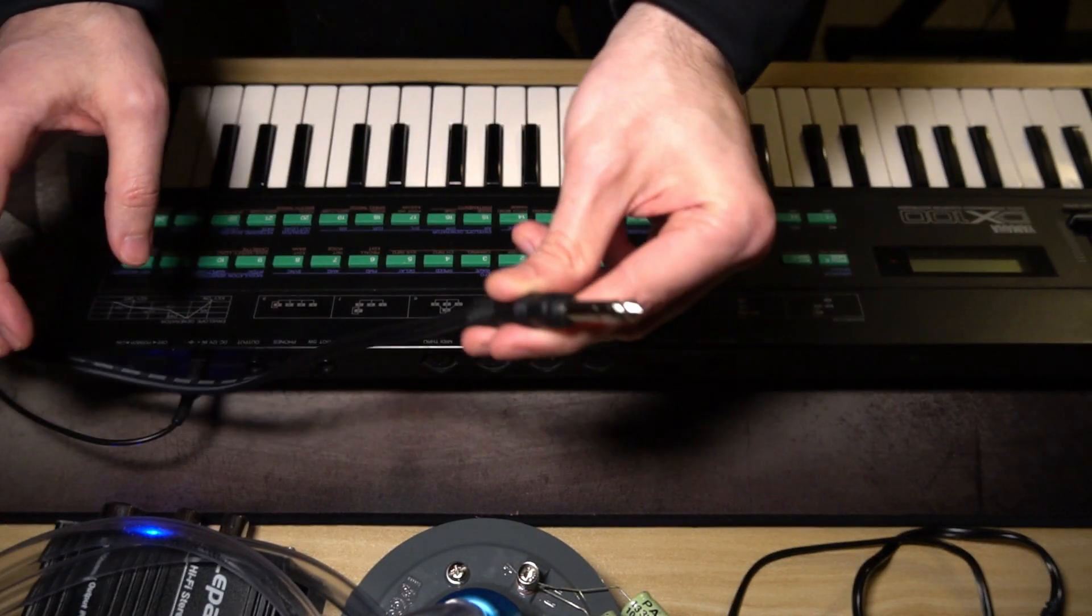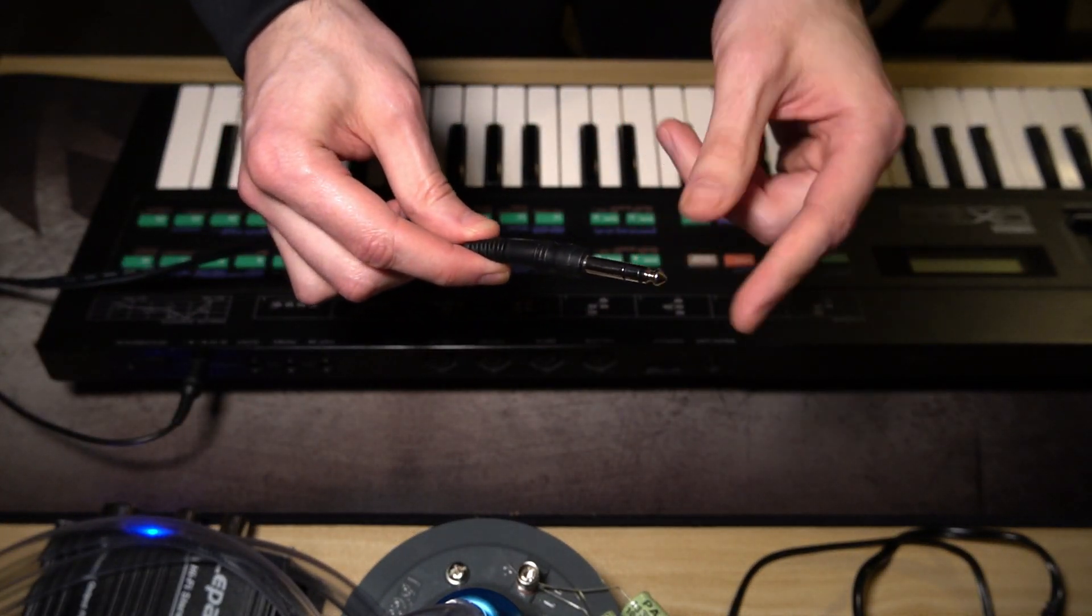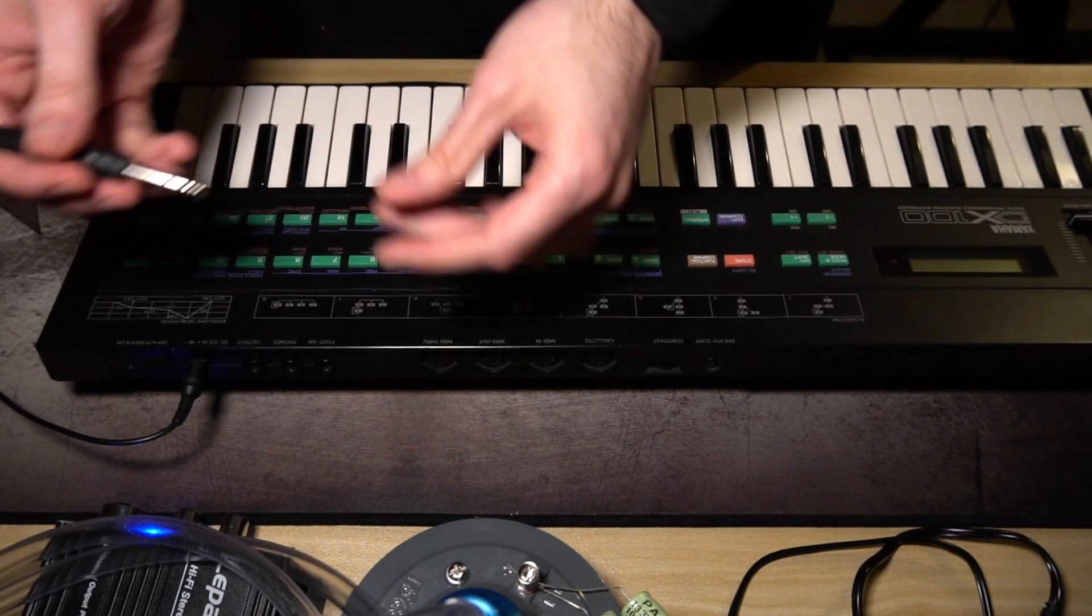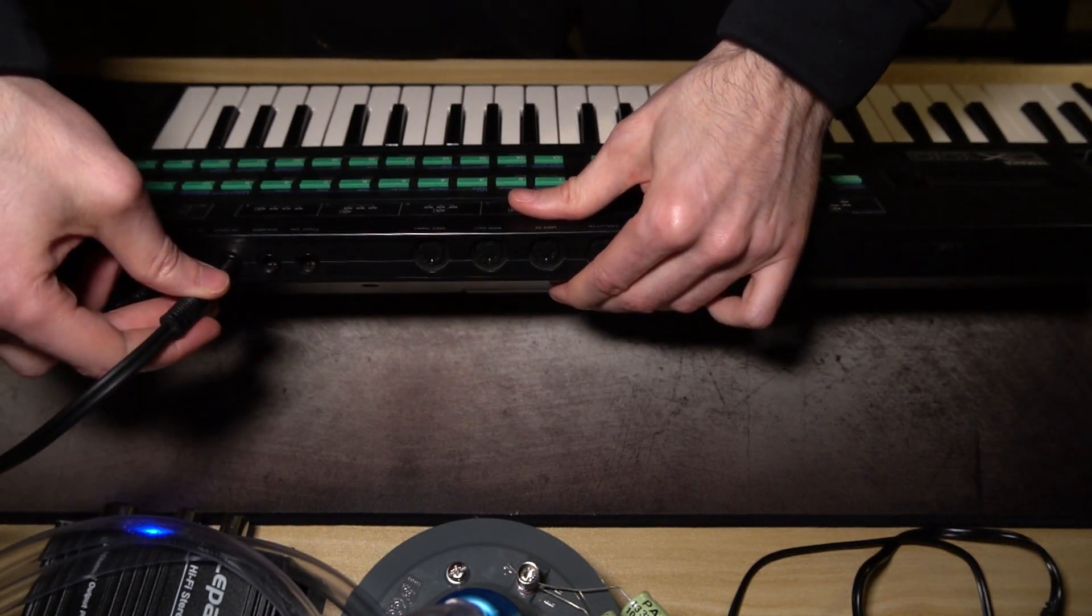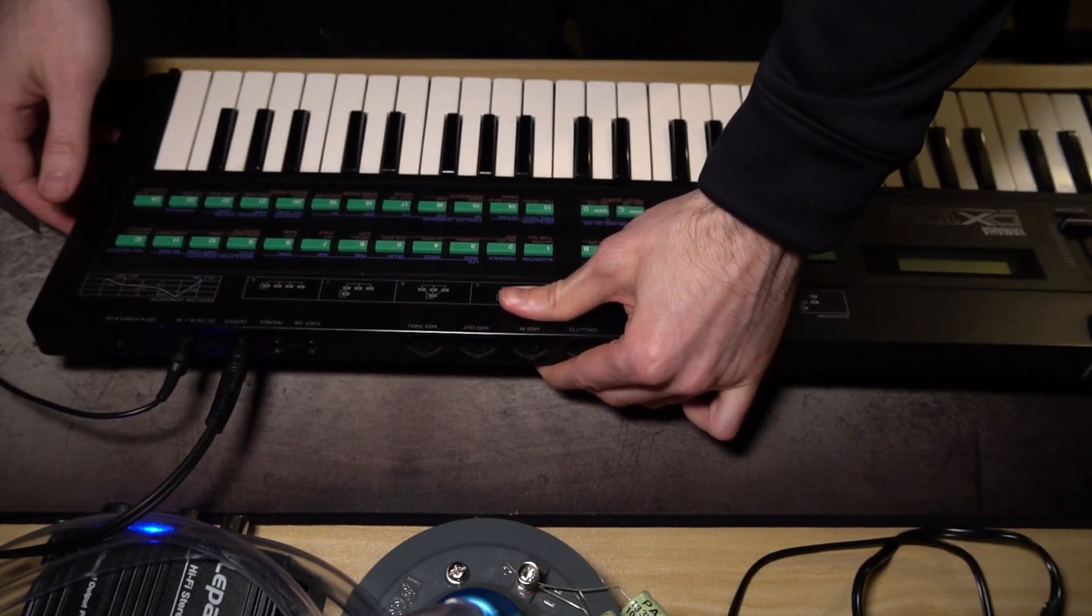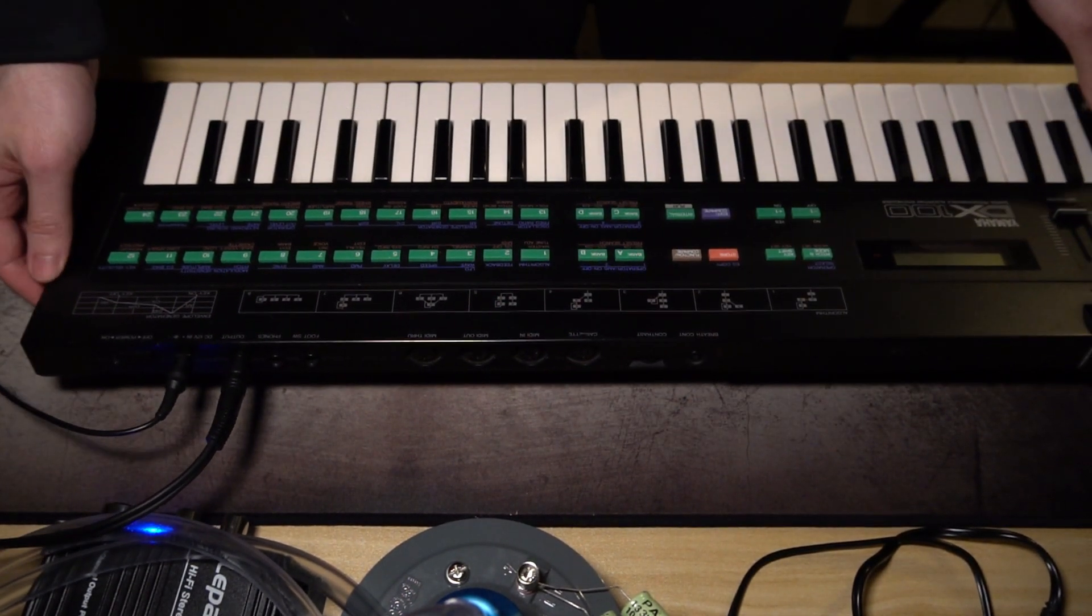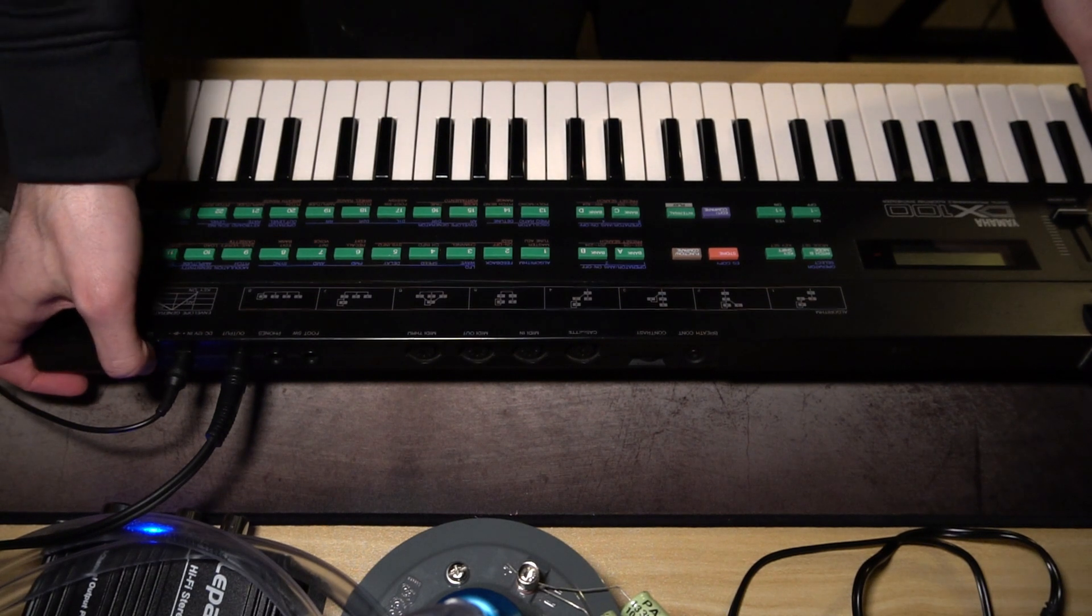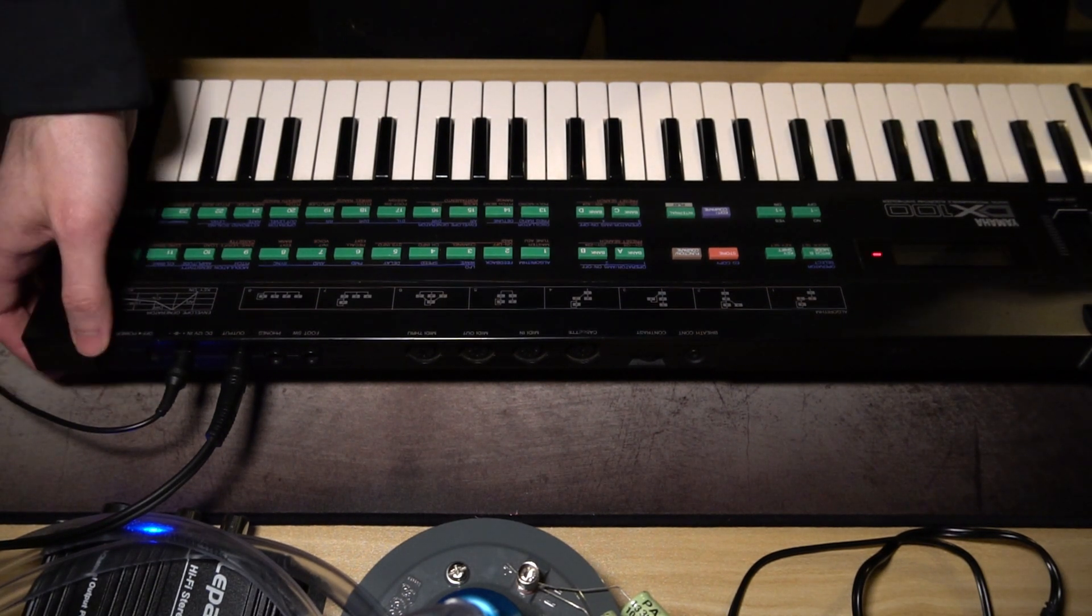Then you're going to take the RCA cable, which is the TRS side, and put that in your output of your synthesizer. Now let me turn this on, it should have sound.